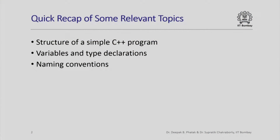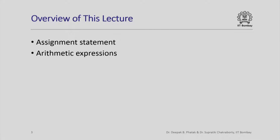Here is a quick recap of some of the topics we have seen earlier. We have seen the structure of a simple C++ program, variables and type declarations for these variables, and how to give names to variables and functions. In this lecture we are going to look at the assignment statement and, in a bit of depth, arithmetic expressions that arise in assignment statements.